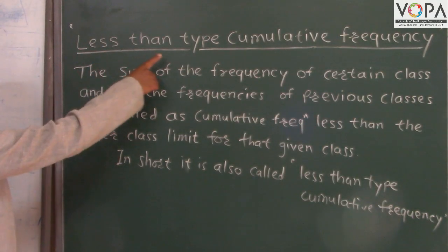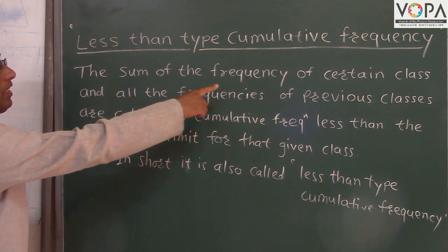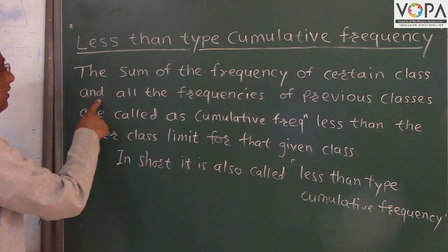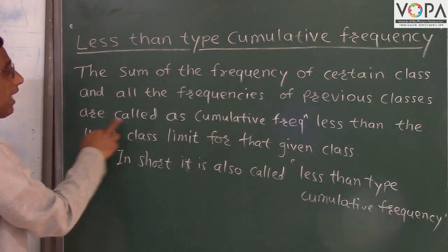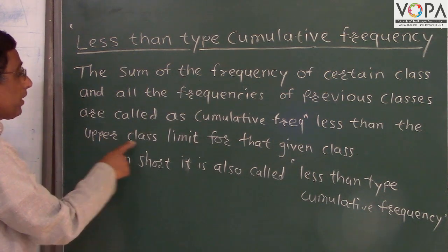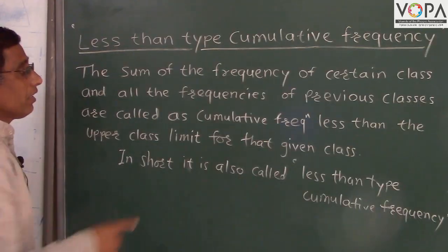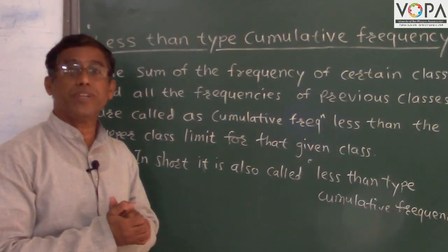Now we take less than type cumulative frequency. The sum of the frequency of a certain class and all the frequencies of previous classes are called as cumulative frequency less than the upper class limit for that given class. In short, it is also called as less than type cumulative frequency.